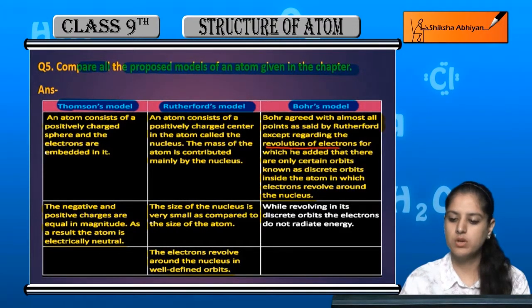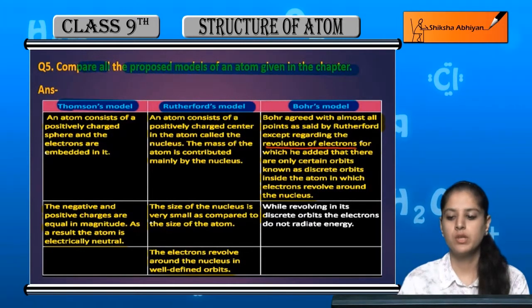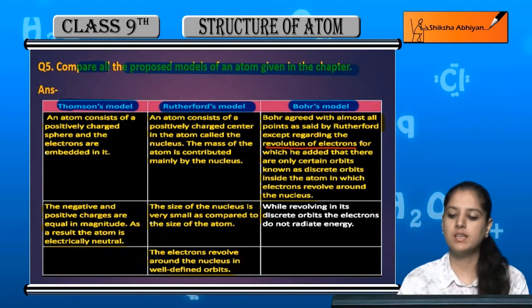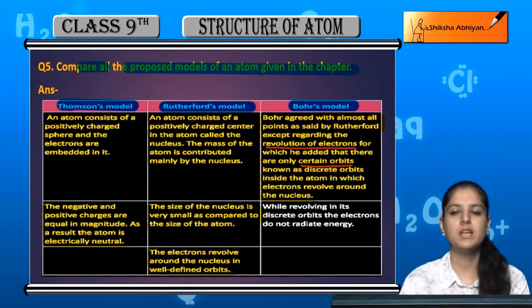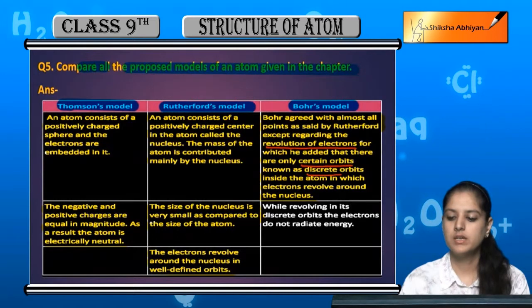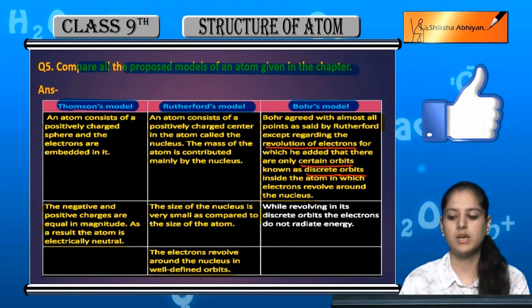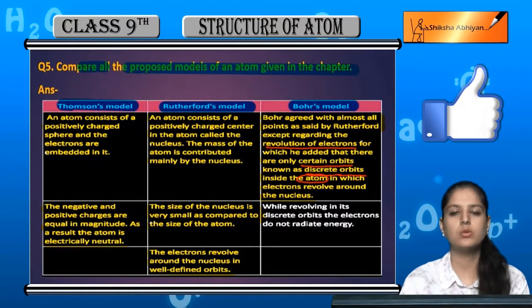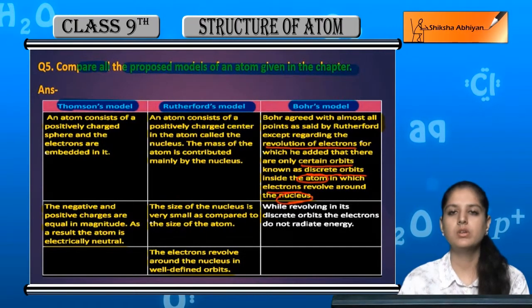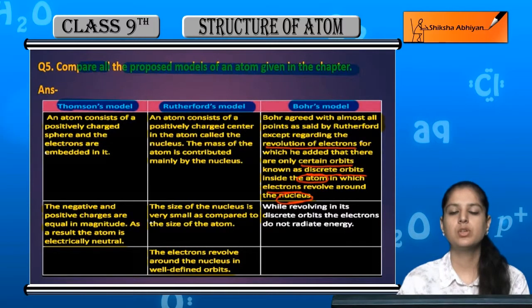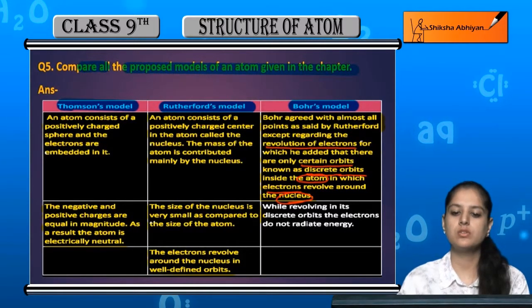So the only point that was not accepted was the revolution of electrons. For this, he added that there are only certain orbits called discrete orbits inside the atom, in which electrons revolve around the nucleus. So the revolution of electrons around the nucleus happens in discrete orbits. This was added in Bohr's model.